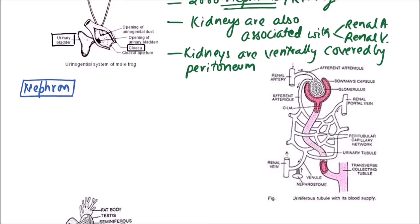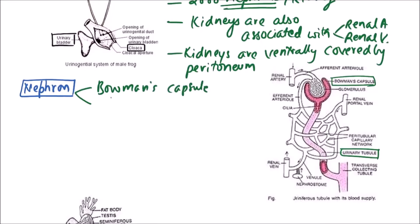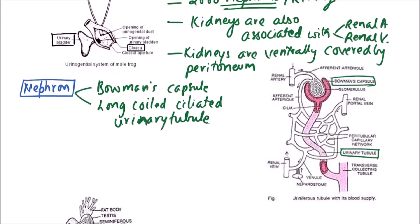Now we'll discuss the nephron or uriniferous tubule. The structure of nephron is divisible into two regions: first is Bowman's capsule, and the other is a long coiled ciliated urinary tubule.